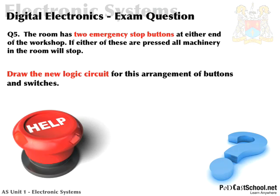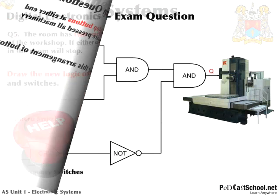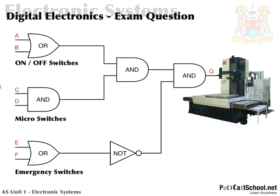I'm about to show you the answer — if you want to pause it now, do so. Here it is. Same as before, but this time we are looking for two emergency switches at either side of the room. Those are inputs — we input those into a NOR gate. I've shown this as a NOT gate or an inverter, but if we wanted to combine that into one logic gate, that would just be a NOR. And then again, input to an AND. So I hope you got that.